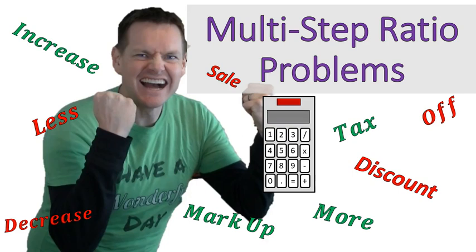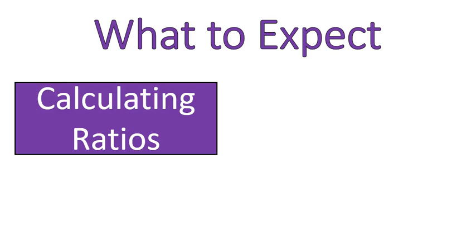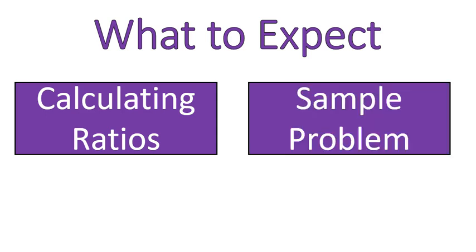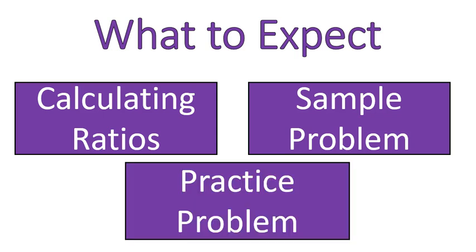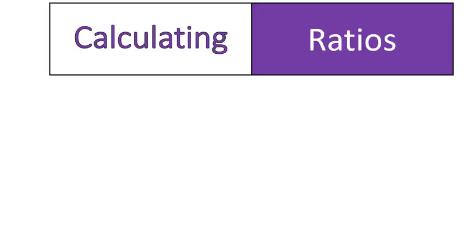Hello, this is Mr. Buffington, and we are looking at multi-step ratio problems in this lesson. First off, I'm going to show you how you would calculate the ratio of a certain item. Then I'm going to do a sample problem with increasing, a sample problem with decreasing, and then have a practice problem that you can try on your own with a full solution. Let's get started.